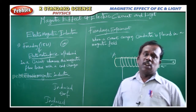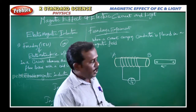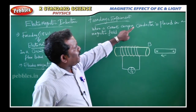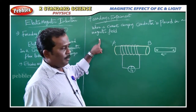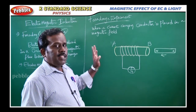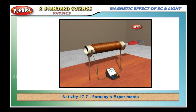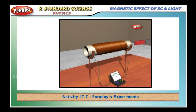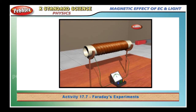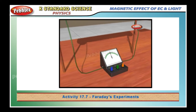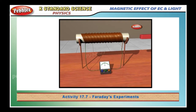In the textbook, a few activities are given. Here is the first activity. When a current carrying conductor is placed in a magnetic field, this activity clearly explains. We take a coil of wire AB having a large number of turns, connect the ends of the coil to a galvanometer. Then take a strong bar magnet.